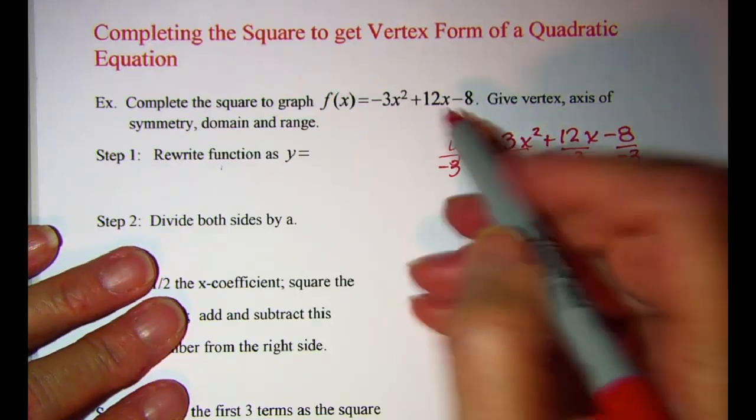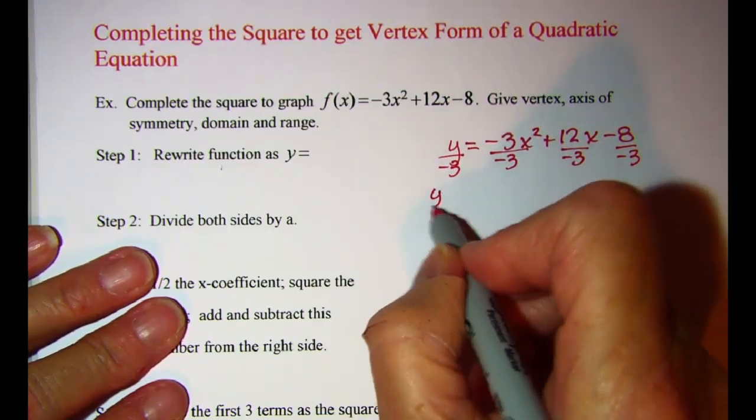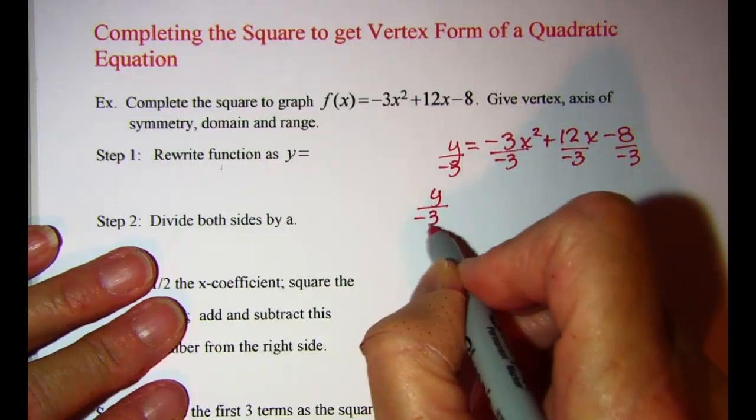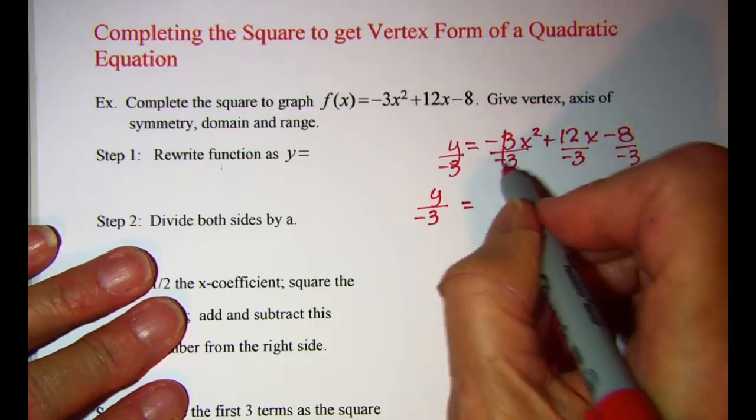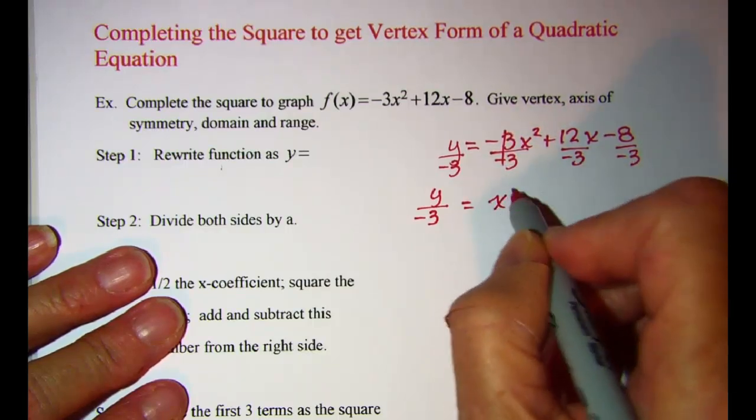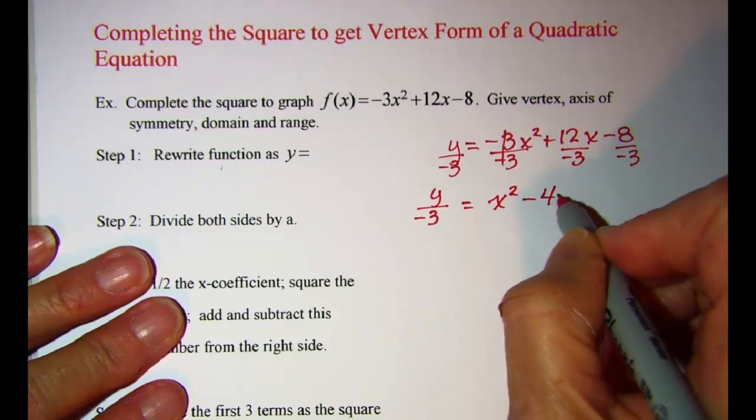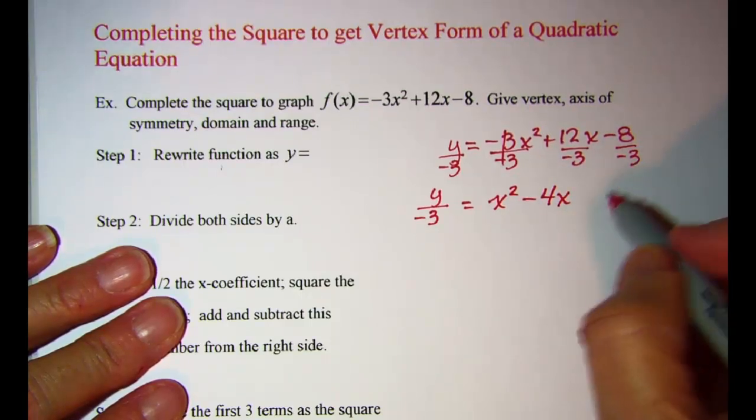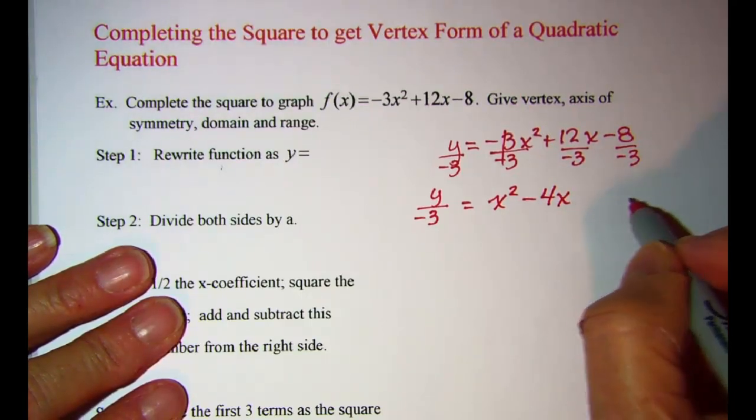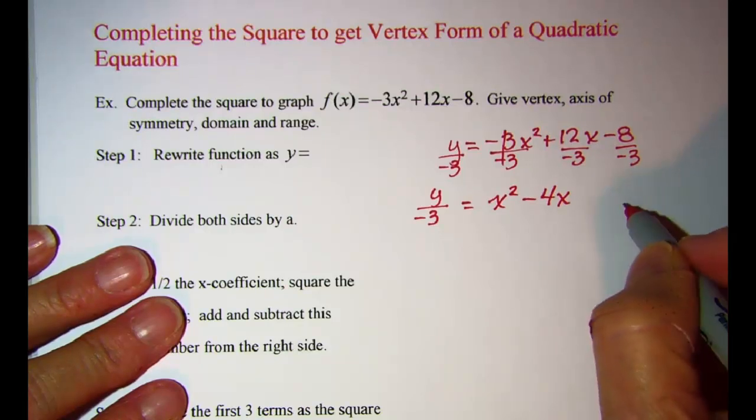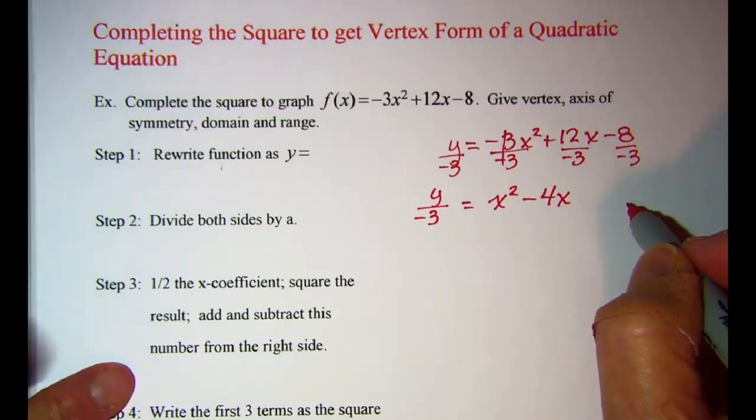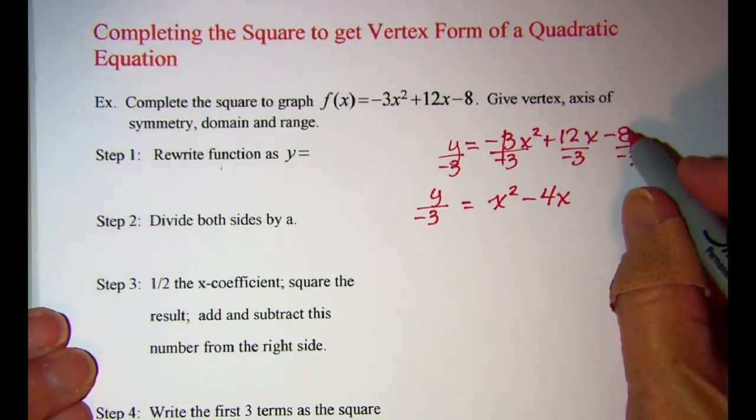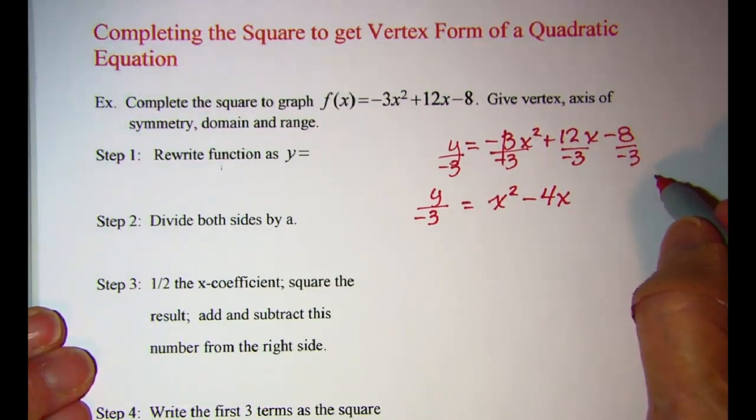And my equation then now is y over negative 3 equals x squared minus 4x. And then I usually leave a space here because I'll be putting my next number in there. This negative 8 divided by negative 3 is a positive 8 thirds.